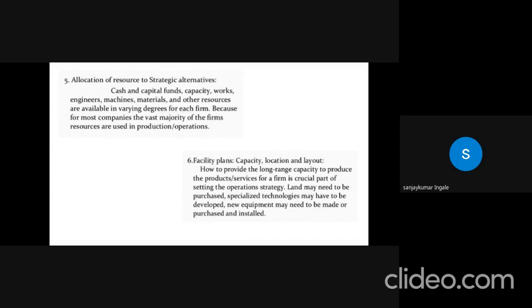The sixth and the last point in this is facility plans. Capacity, location and layout. How to provide a long range capacity to produce the products and service for a firm is crucial part of setting the operations strategy. Land may be needed to purchase. Specialized technologies may have to be developed. New equipment may need to be made or purchased and installed.